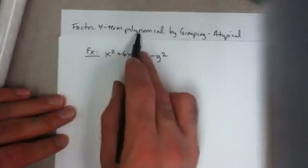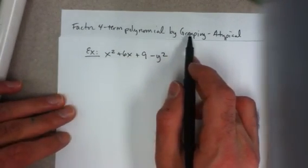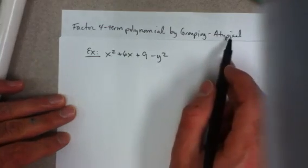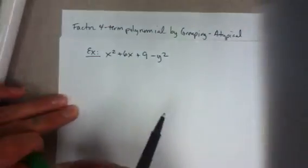This video is about factoring a four-term polynomial by grouping, but it's a look at a certain atypical case. And what I mean by atypical is this.